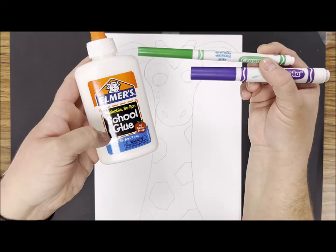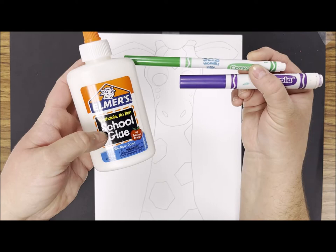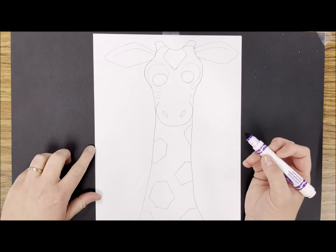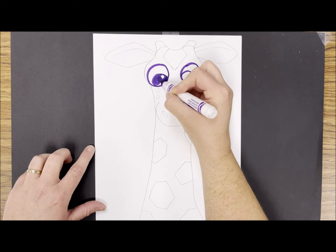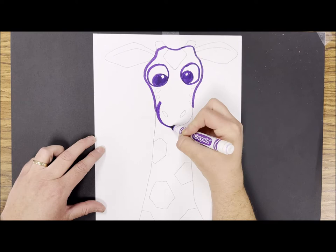Now I'm going to be tracing my pencil with washable marker and then I'll trace that with glue. It has to be a washable marker because it will get soaked up into the glue when it dries. So I am going to trace every single pencil line with marker and it doesn't necessarily have to be a realistic color.